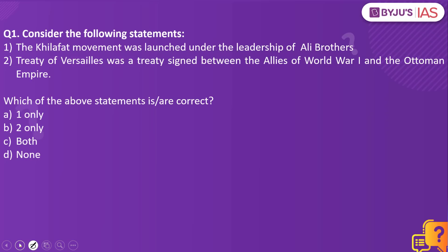Consider the following statements. The Khilafat movement was launched under the leadership of Ali brothers. The Treaty of Versailles was a treaty signed between the allies of World War I and the Ottoman Empire. Which of the above statements is correct? The answer to this is one only.